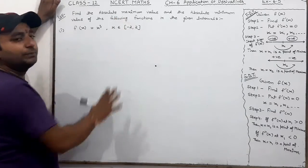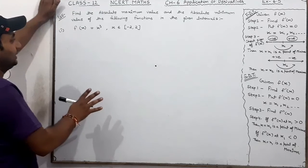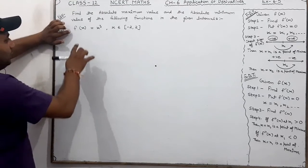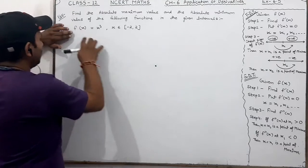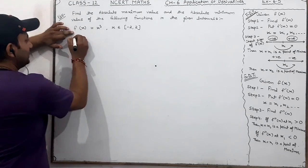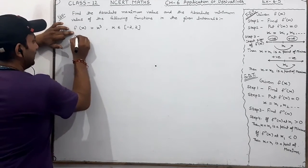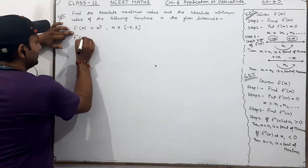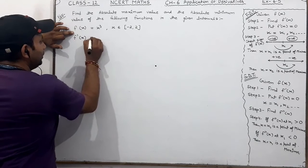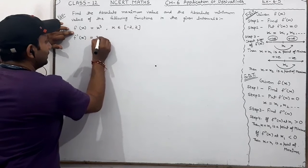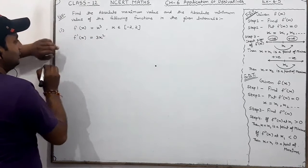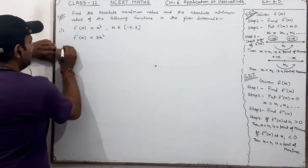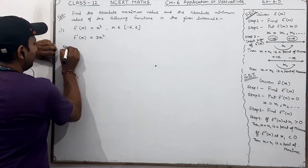We need to find the absolute maximum and minimum value. What do we need to do? First, we need to find F'(x). So, it will be 3x squared, and we set it equal to zero to find the output.